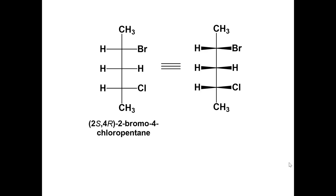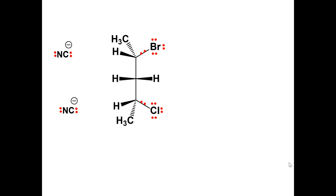In an SN2 reaction, the attack occurs from the backside of the carbon-leaving group sigma bond. To make it visually easier to see, I have redrawn the molecule and put the leaving groups on the plane of the page.